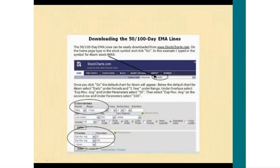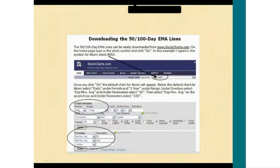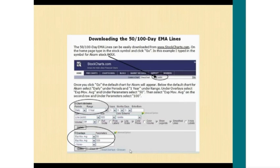It's easy to download the 50- and 100-day EMA lines — there are many websites available. One I like to use is stockcharts.com. Just type in the stock symbol, under chart attributes choose daily and a one-year range, then under overlays select the 50-day exponential moving average and the 100-day exponential moving average. Click update and it will display both EMA lines, giving you an instant view of whether you should be buying or selling that stock. Overall, using a moving average system that follows the trend is one of the best methods for the average investor or trader.